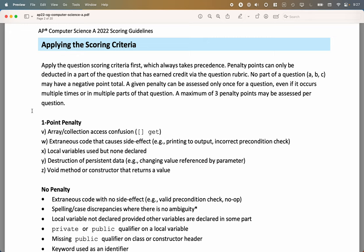So a couple of things that I hope are not relevant, but you still may find reassuring. Any given part of a question, sometimes there's, you know, multiple parts, usually two, occasionally three. No part can have a negative point total. So that's something to keep in mind. A given penalty that we're about to talk about can only be applied once for a given question, even if you do it multiple times or in multiple parts. In addition, no more than three penalty points in terms of these general scoring guidelines can be applied for a given question.